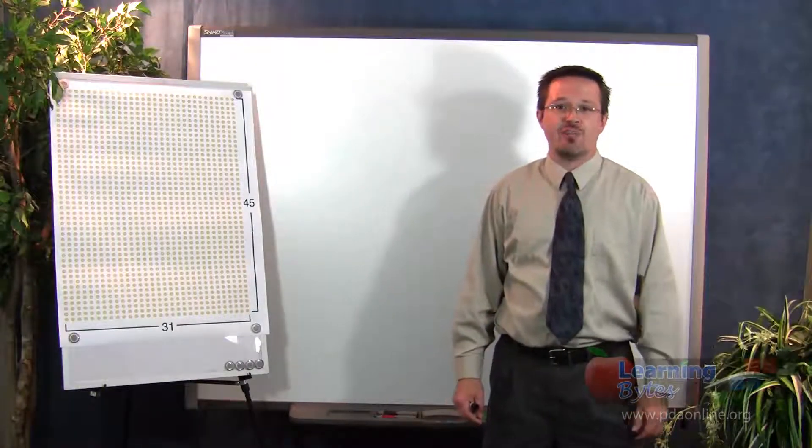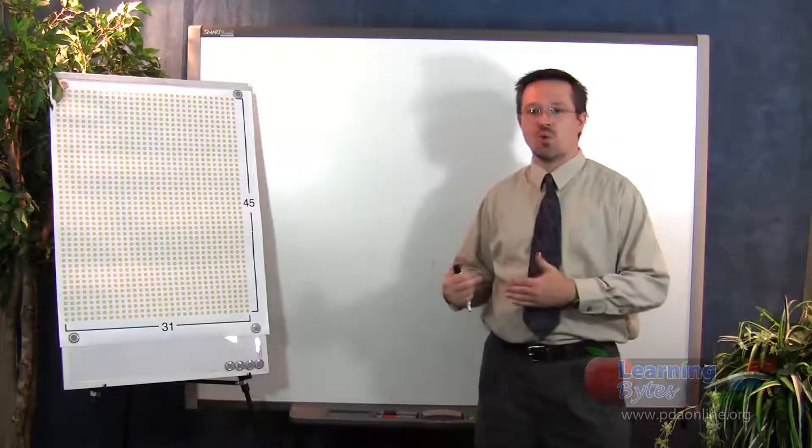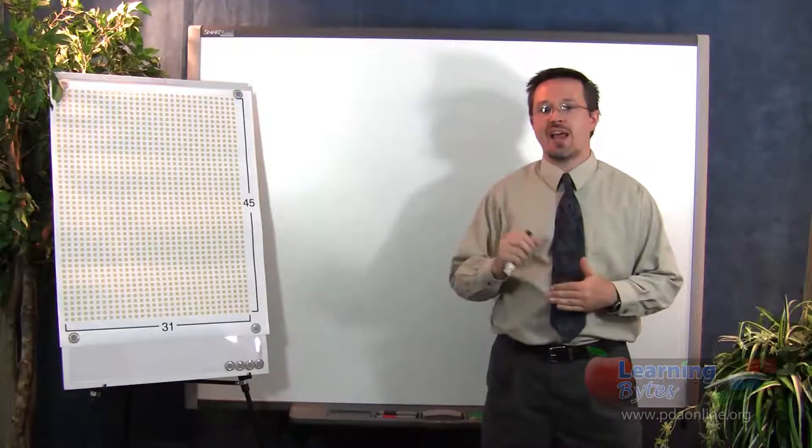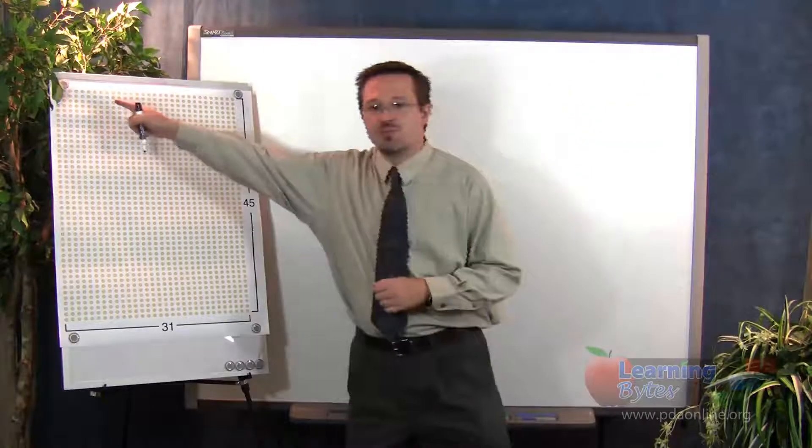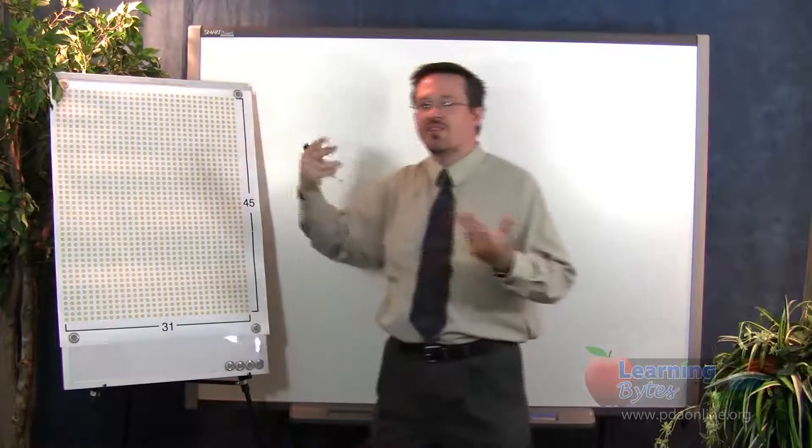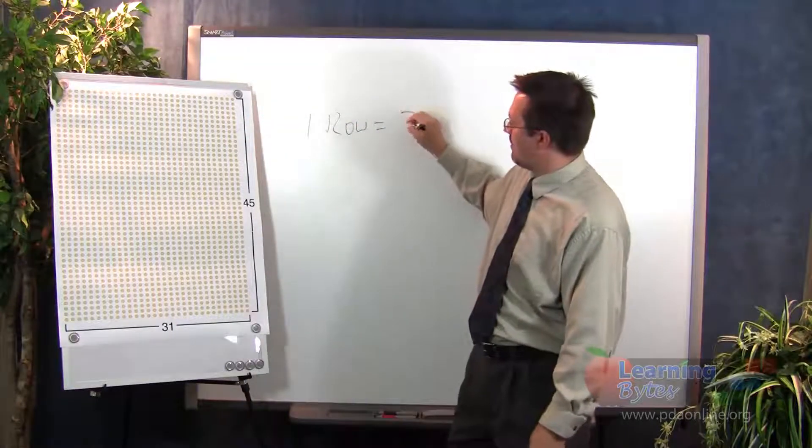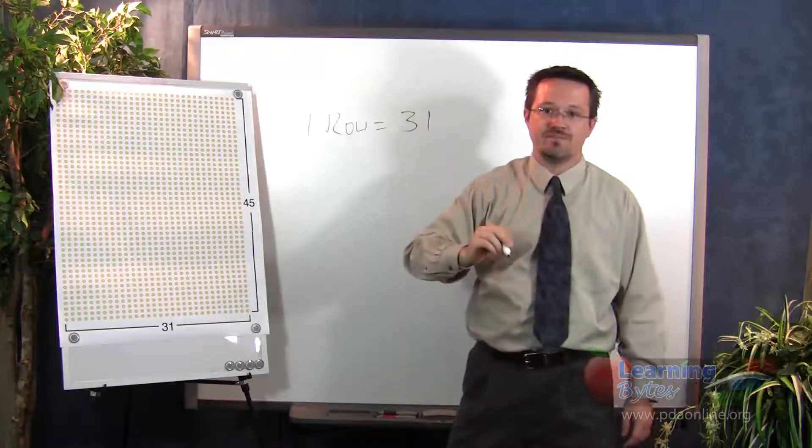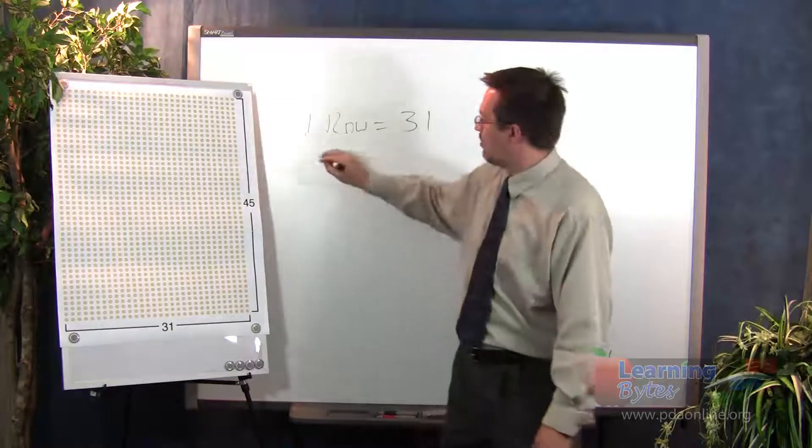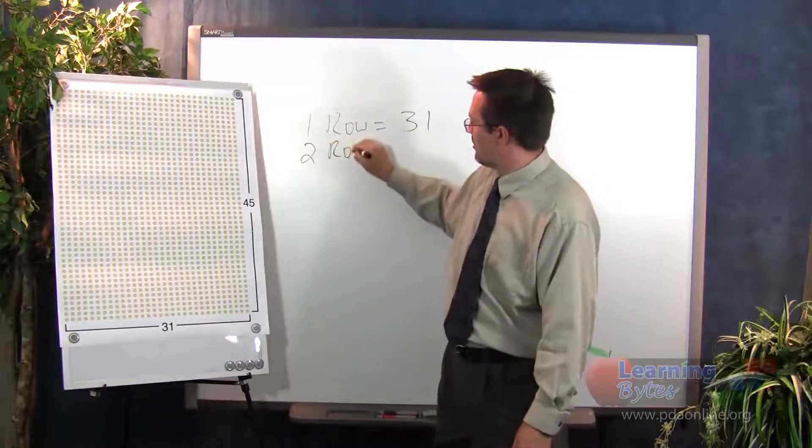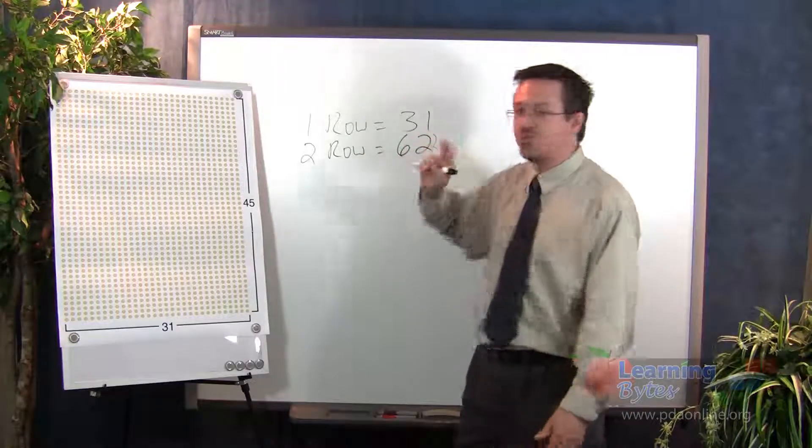After your students have had an opportunity to develop their own strategies for solving the problem, you'll want to start guiding them toward duplation. To do that, the first question you'll want to ask them is, how many students would be in the first row of students? They'll pretty easily be able to tell you that one row will have 31 students in it. Then ask them, well, how many students would be in two rows? And it will be pretty easy for them to tell you that there are going to be 62 students in two rows.